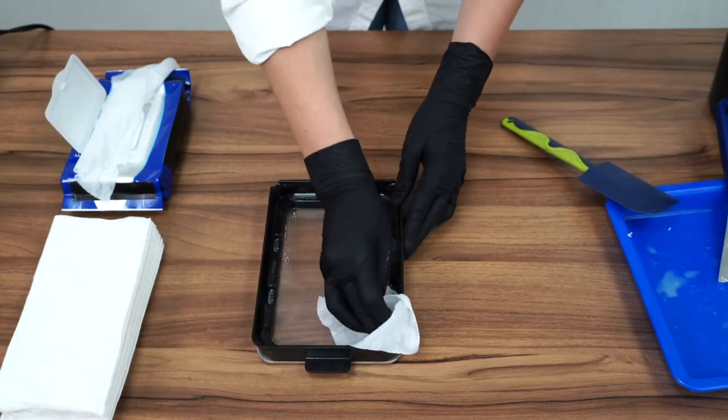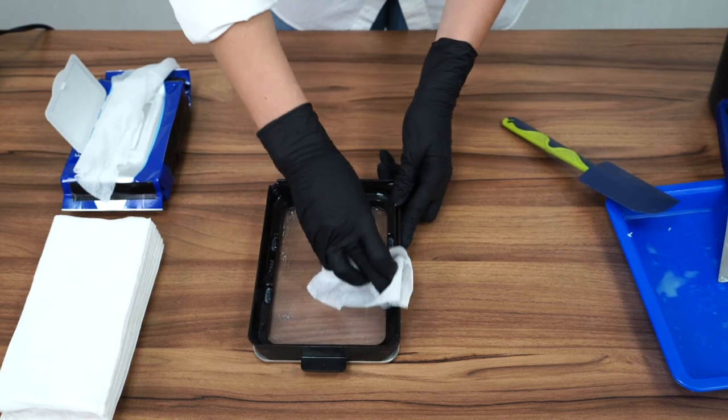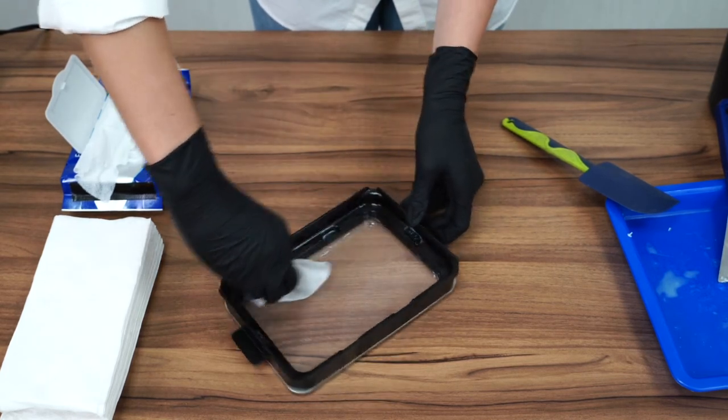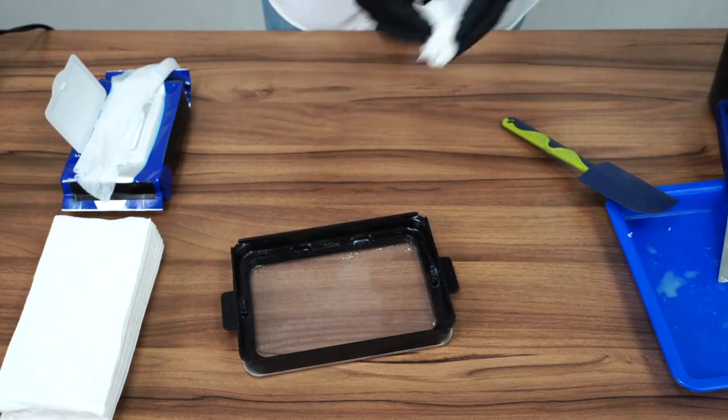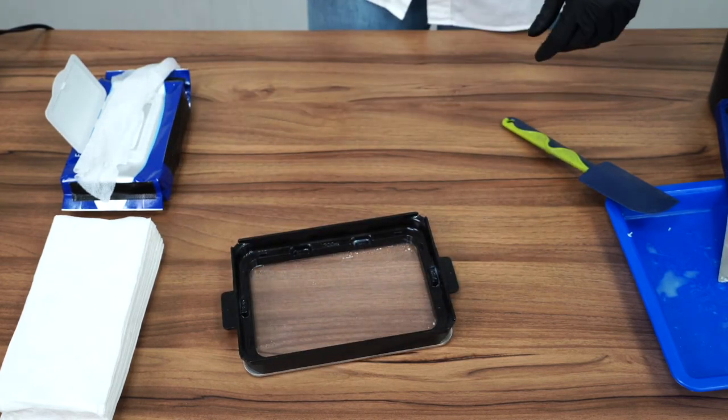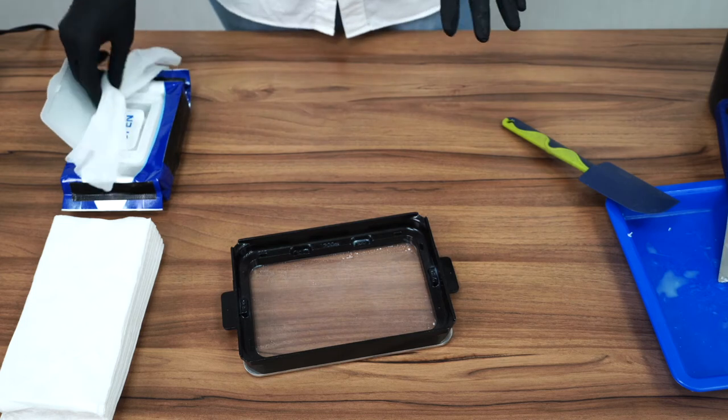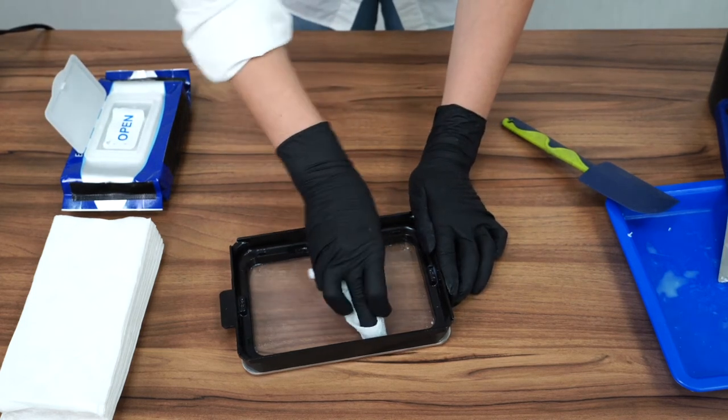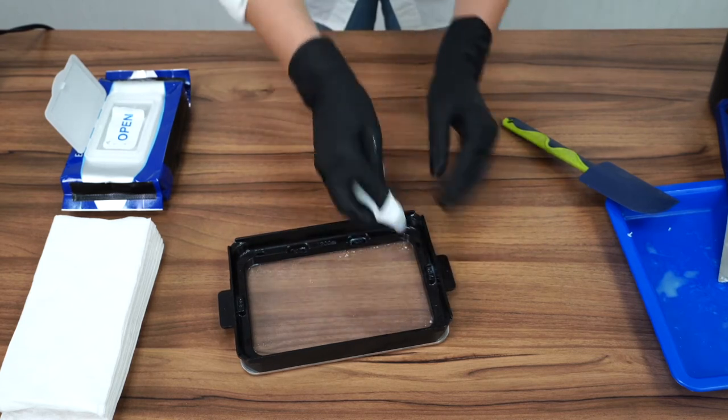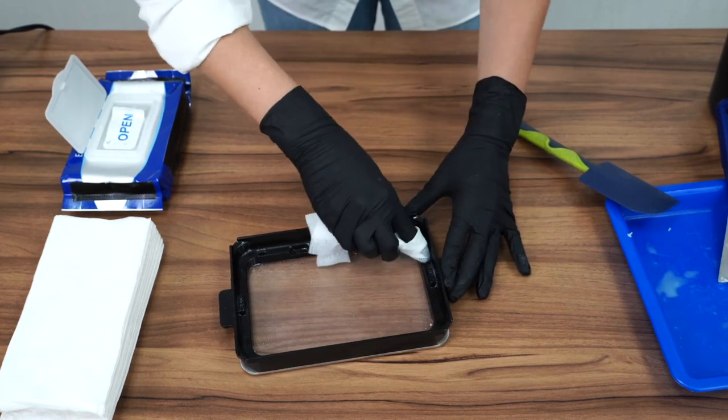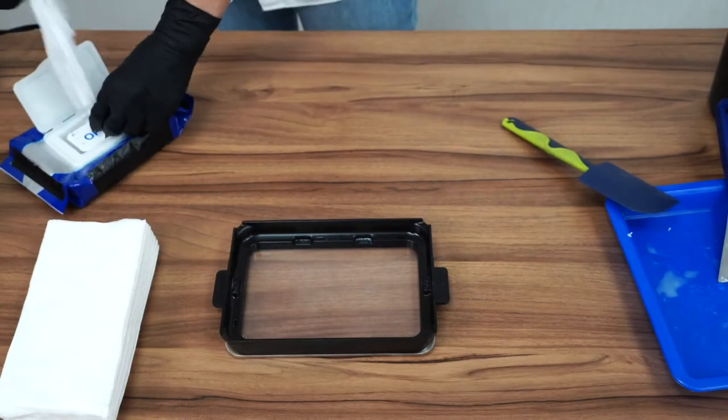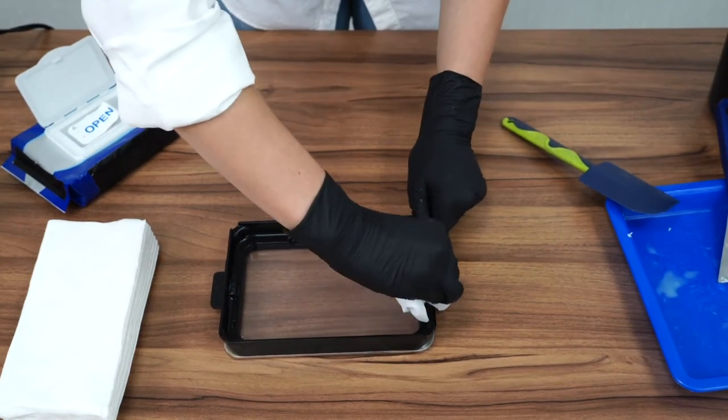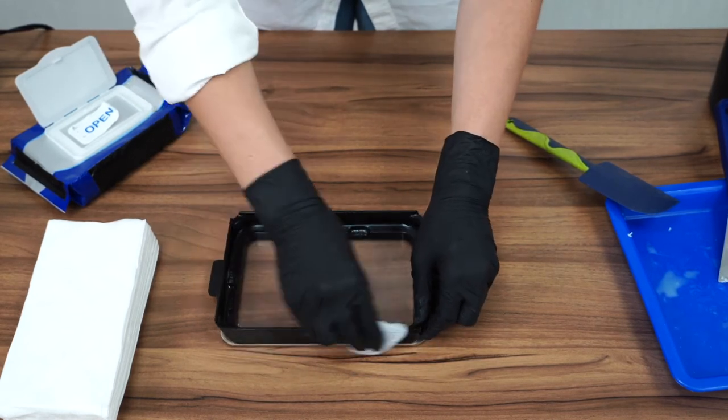Again, I can also do this with my fingers here, just double checking, and throwing the wipe away. You might need to do this a few times to make sure that all the resin is really gone out of every little corner here. Now that the inside is nice and clean, we're also going to go around here. I'm just going to make sure that we don't touch the back of the vat.